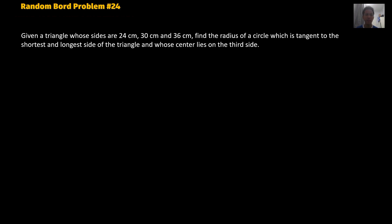So this problem is a past board exam problem — an engineering board exam problem. Given a triangle whose sides are 24 cm, 30 cm, and 36 cm, find the radius of a circle which is tangent to the shortest and longest side of the triangle and whose center lies on the third side.